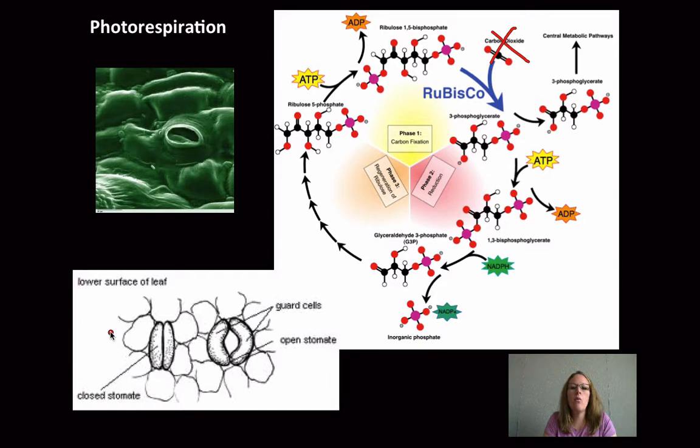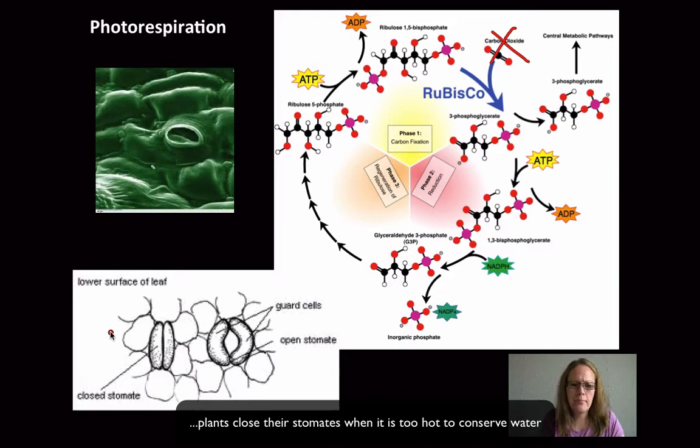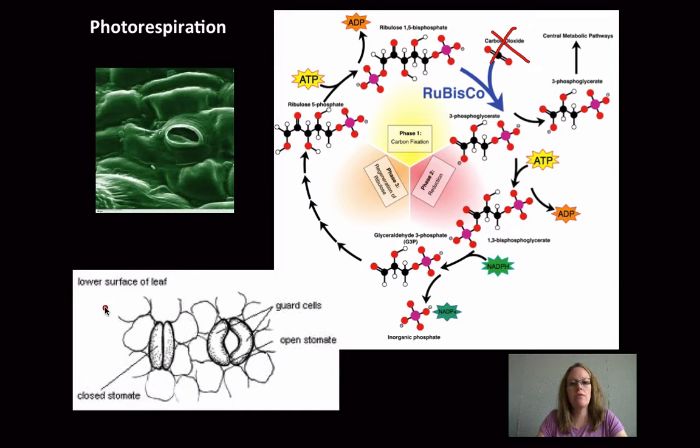So if we have the stomate, it can be closed. And the plant wants to close this when there's not enough water because water will actually diffuse out of the plant. If there's a lack of water, it's going to want to close its stomates. Also, if it doesn't need carbon dioxide, it's going to close its stomates. But when the plant wants to photosynthesize, it needs to have these stomates open.